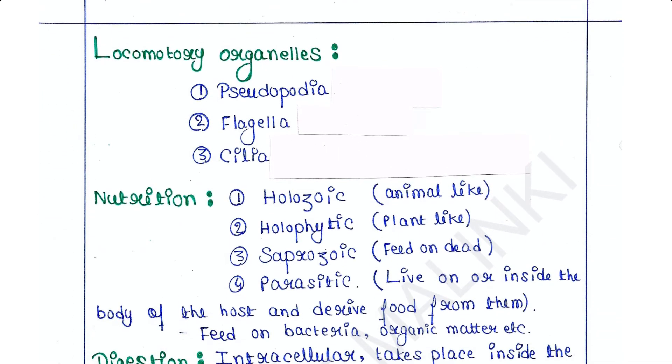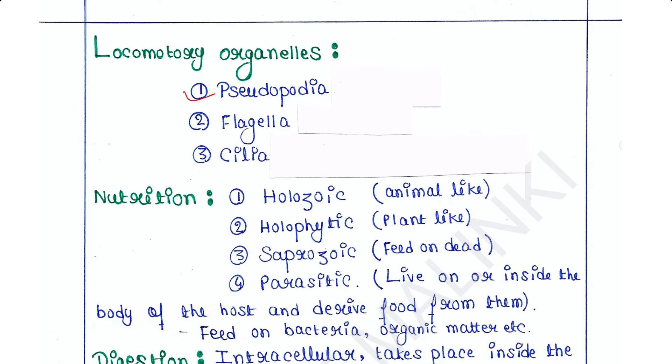Locomotory organelles: pseudopodia, flagella, cilia. These are different types of locomotory organelles which are present in protozoa.